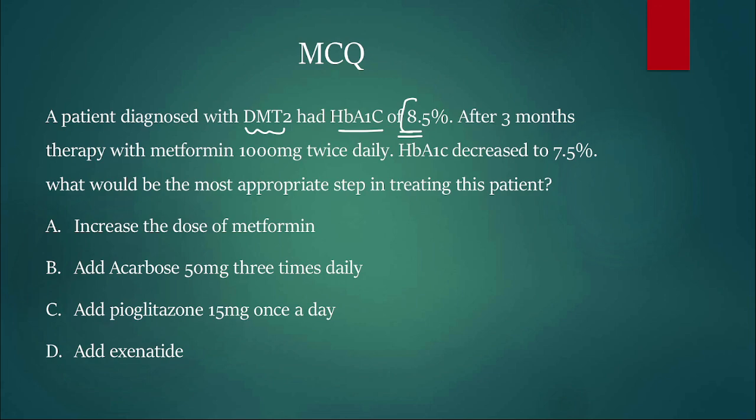The last question: a patient is diagnosed with diabetes type 2, HbA1c of 8.5%, which is very high. After three months therapy with metformin 1000mg twice daily - meaning already on maximum dose of metformin 2000mg - what would be the most appropriate next step in treating this patient? Increase the dose of metformin, add acarbose, add pioglitazone, or add exenatide? Try to guess your answer.